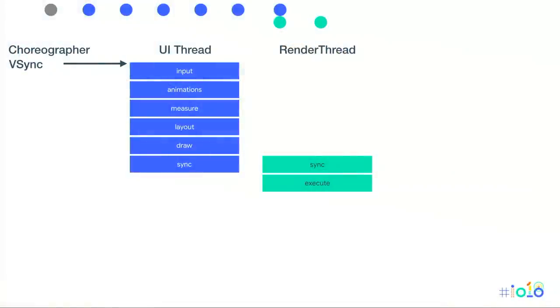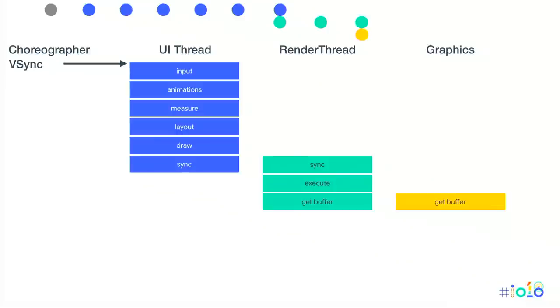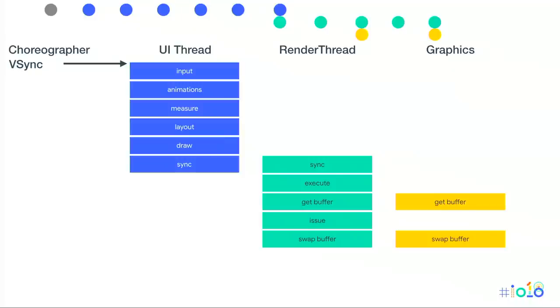On the UI thread, we process input events, which can trigger changes in properties. We also run animations and change property values, which may trigger layouts and invalidation. We do the full traversal pass — measuring views, laying them out, and drawing them. Once done, we sync that information over to the render thread. The render thread turns this into native versions, gets a buffer from the GPU, issues all the GPU commands via OpenGL, swaps the buffer, and then the graphics system does compositing.